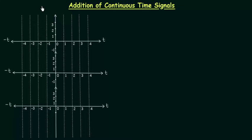In the last lecture we completed continuous and discrete time signals. In this lecture I will explain how to add two or more continuous time signals. We add the amplitudes of two or more signals at each instant of time to get their sum.